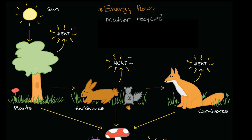It starts with primary producers, which are usually going to be plants. They can also be bacteria that are able to photosynthesize — able to take that energy and create biomolecules that store energy from it. These are the primary producers, the plants in this diagram. Sometimes you'll see them referred to as autotrophs.